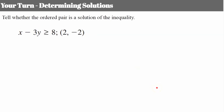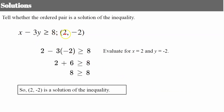Your turn — please pause and come back when you're ready to check your work. Welcome back. We evaluate for x = 2 and y = -2: 2 subtract 3 times (-2). Is that greater than or equal to 8? Negative 3 times -2 is positive 6; 2 + 6 = 8, and 8 is greater than or equal to 8. Since 8 equals 8, this is true — so (2, -2) is a solution to this inequality. That's how you test a point.